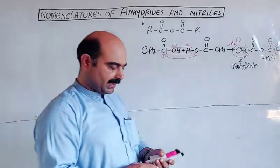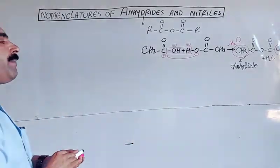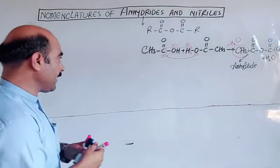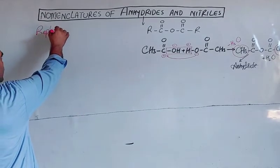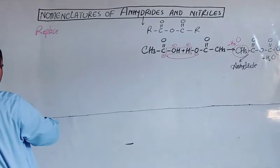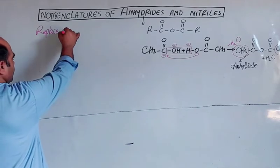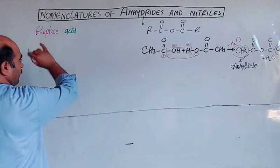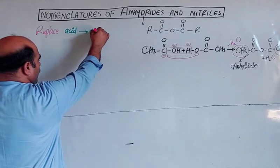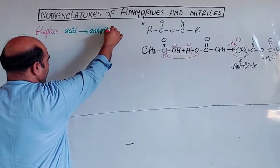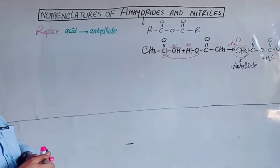The nomenclature rule is simple: we replace the word 'acid' with 'anhydride'. So the rule for both simple and mixed anhydrides is to replace the word 'acid' by 'anhydride'.